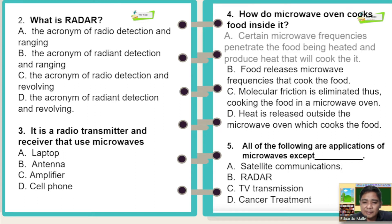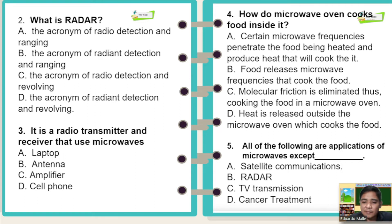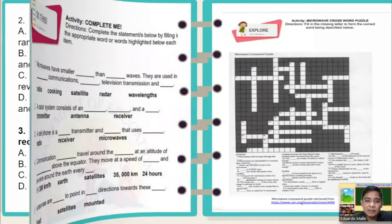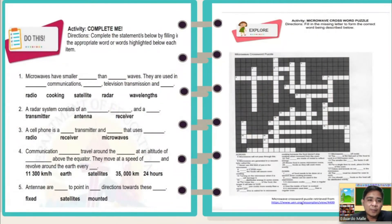Number five: all of the following are applications of microwaves except — A: satellite communications, B: radar, C: TV transmission, D: cancer treatment. The correct answer is D, cancer treatment.